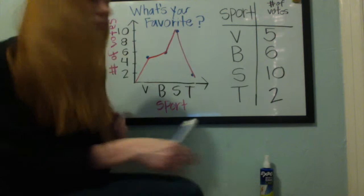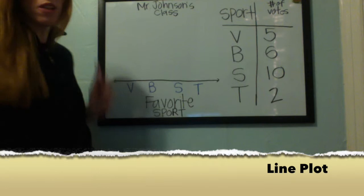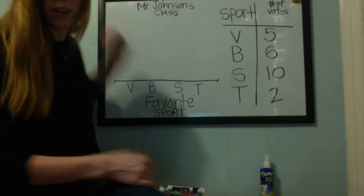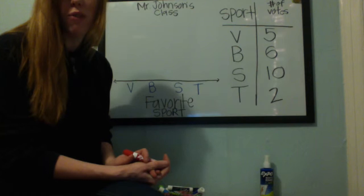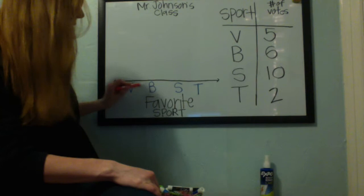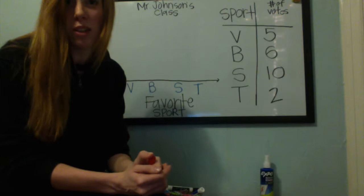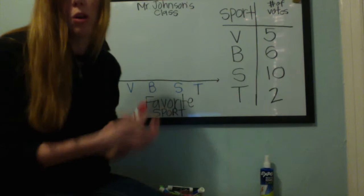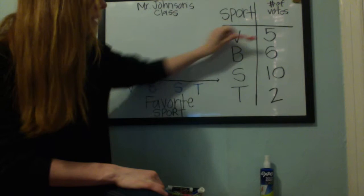Some common features of a line plot are that it has one horizontal line going from left to right. We're going to have our title — in this case we'll label it Mr. Johnson's class. Overall, we want to see what the total number of votes would be. So we have our favorite sports: volleyball, basketball, soccer, and tennis. The first thing you would want to do is go ahead and organize the information into a table, which is something we've already done. With this table, we see the number of votes per sport.